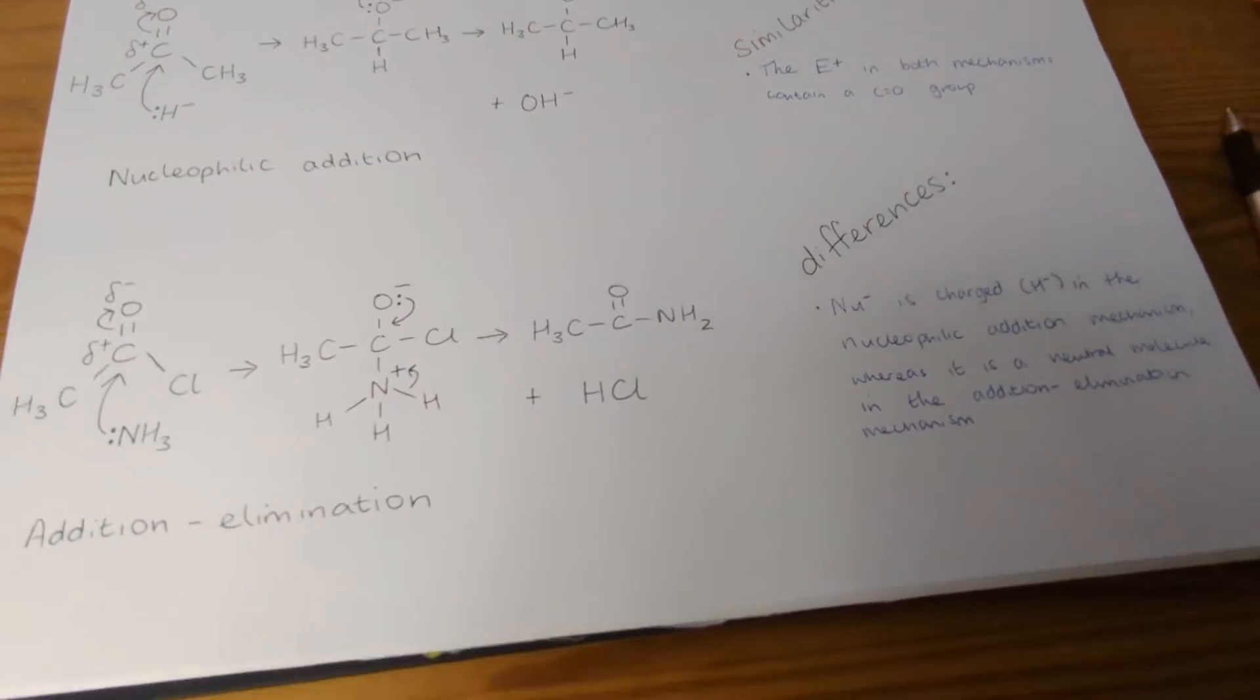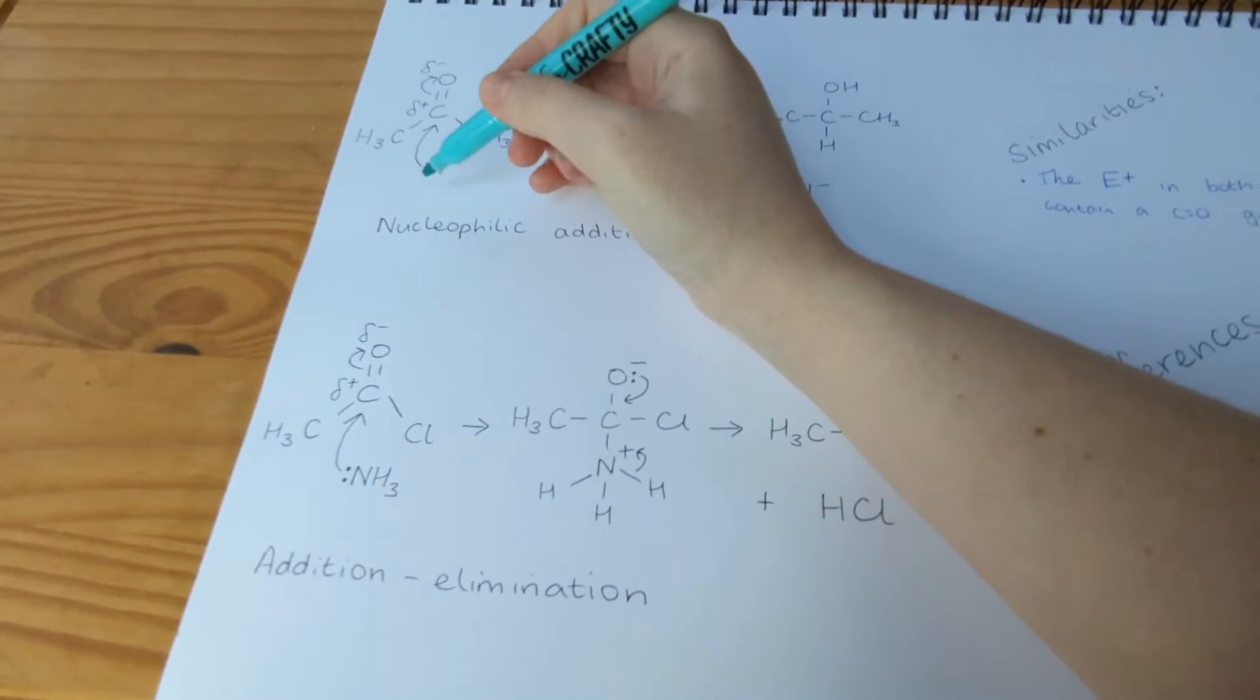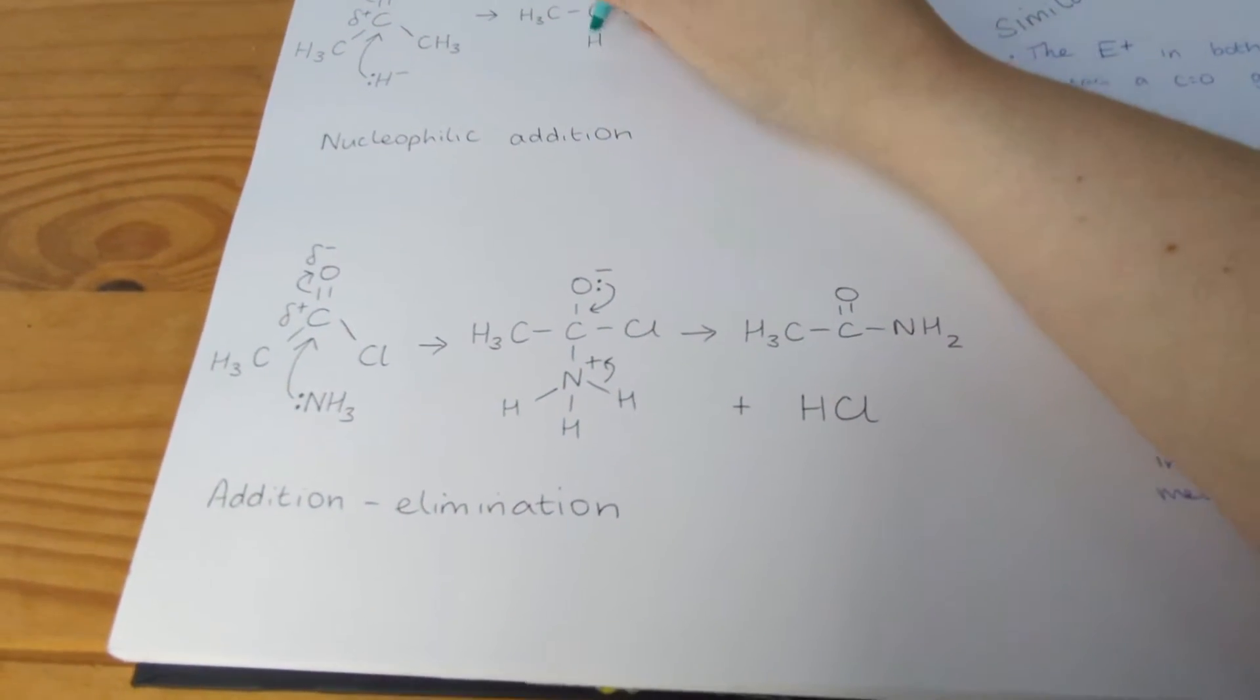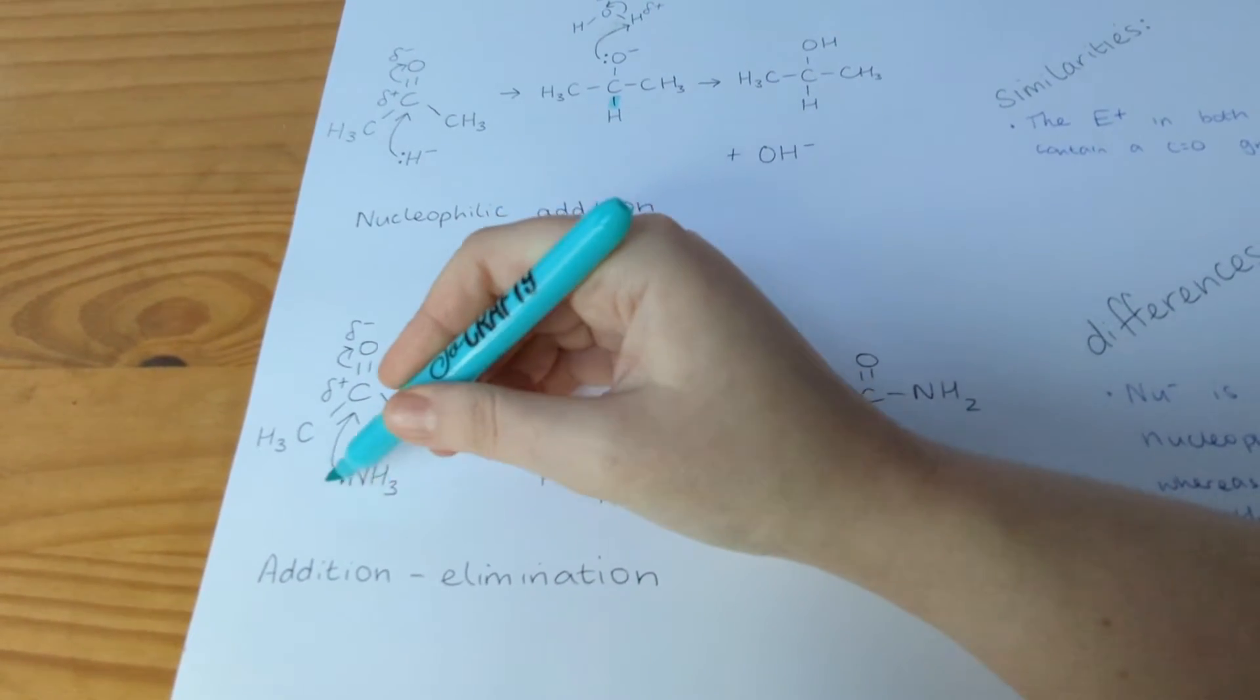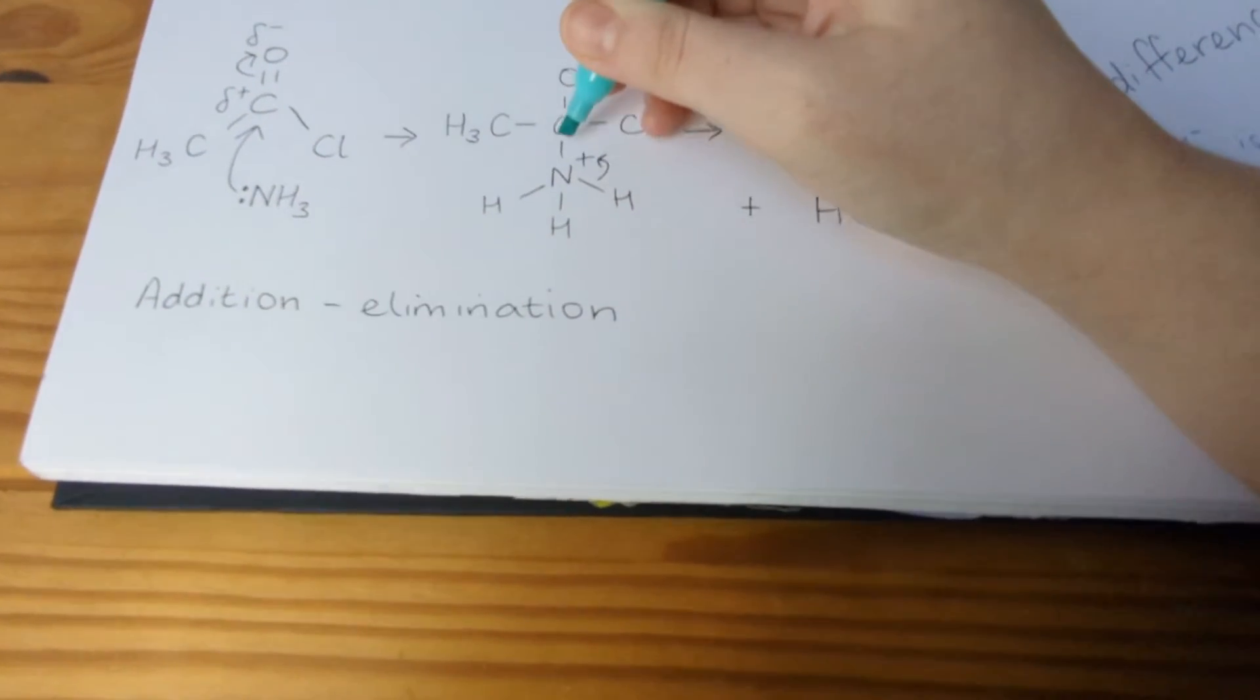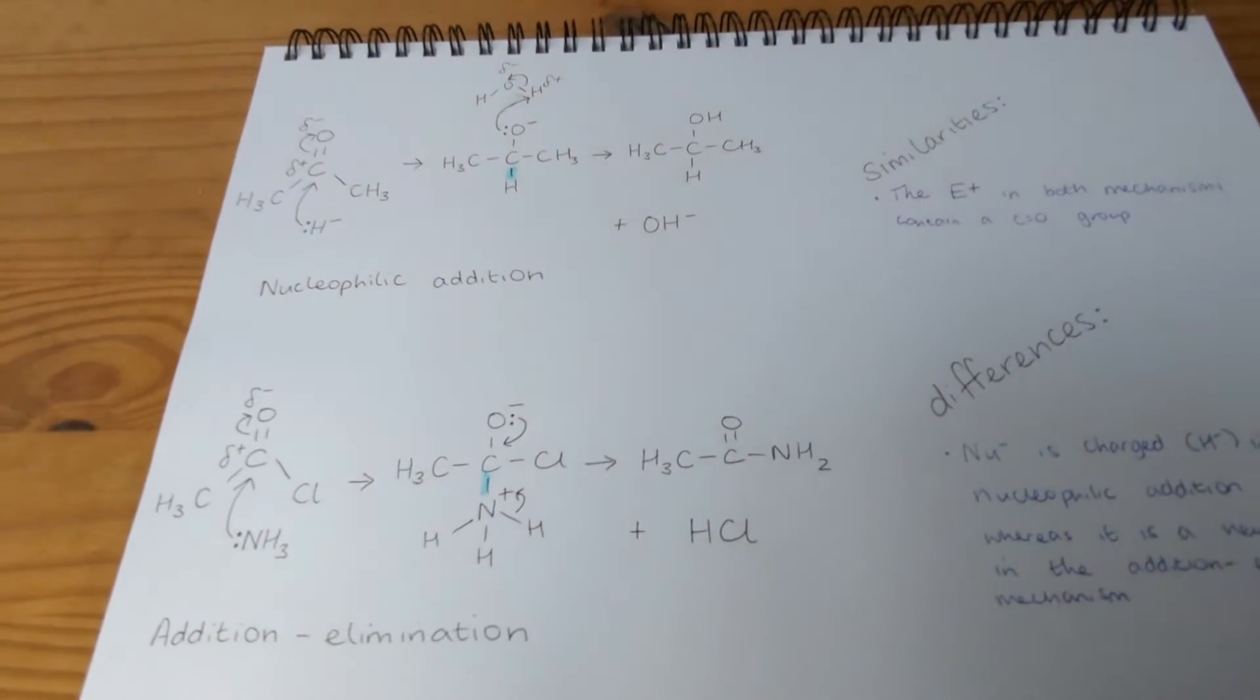And then if we look at type of bonds formed next, we can see that this hydride ion is donating a pair of electrons to the carbon. And that's resulting in a carbon-hydrogen bond being formed. Whereas in this one, the ammonia molecule is donating a pair of electrons to the carbon. And that forms this carbon-nitrogen bond there. Next.